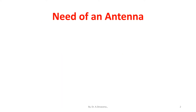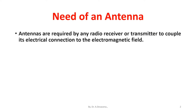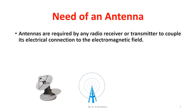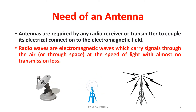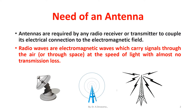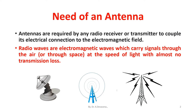Need of an antenna: Antennas are required by any radio receiver or transmitter to couple its electrical connection to the electromagnetic field. Here are some of the representations of antennas. Radio waves are electromagnetic waves which carry signals through air or through space at the speed of light with almost no transmission loss.